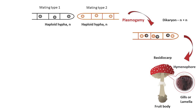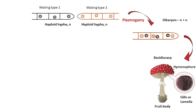The hymenophor is the part under the mushroom cap and can have different morphology of the surface. In our example, the hymenophor consists of gills, or lamellae. Now let's take a look at one separate gill. Each gill is covered by thousands of spore-forming cells called basidia. At this stage, each basidium is dikaryotic — it still has two separate nuclei.